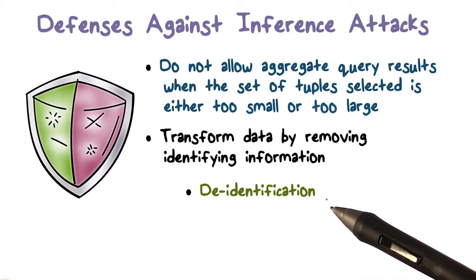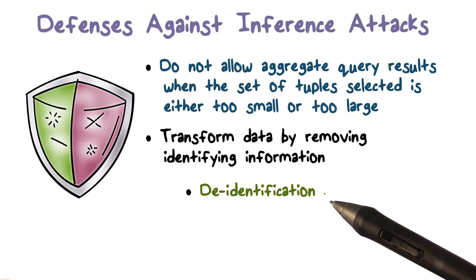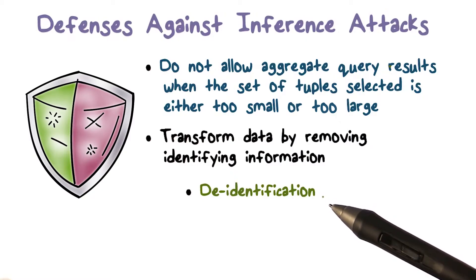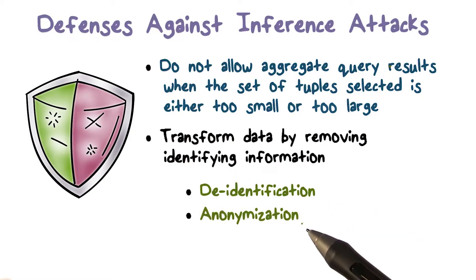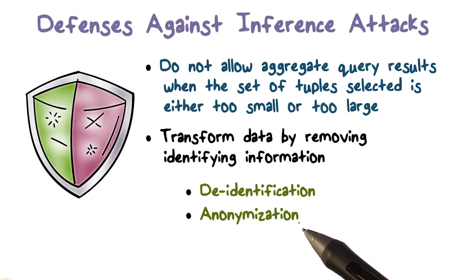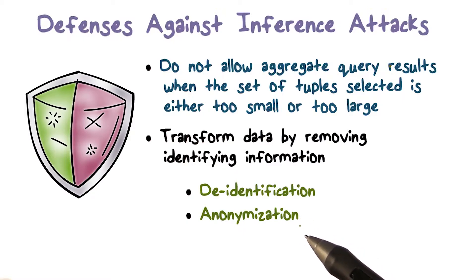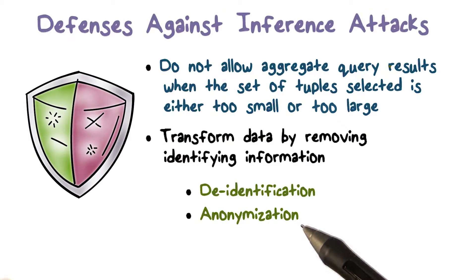The process is called de-identification. De-identification essentially says to drop or remove all the values that identify a particular user. However, de-identification alone is not sufficient. For example, if there is only one student with junior standing, although we dropped the student ID that directly identified that student, the standing field or attribute would still tell us, even without the ID, who that particular tuple is about.